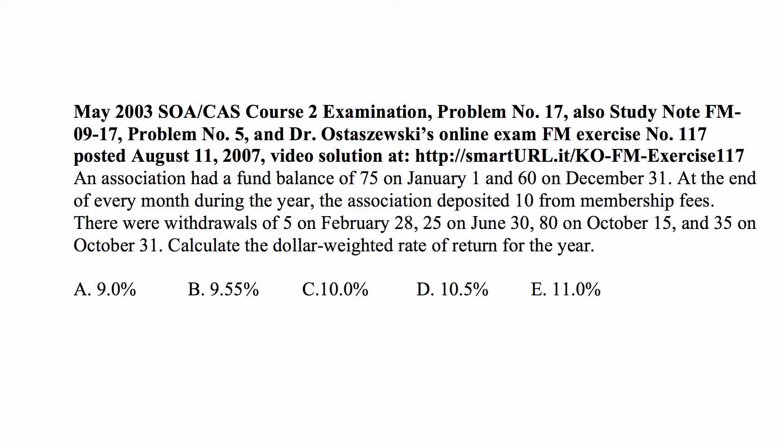Calculate the dollar-weighted rate of return for the year. The dollar-weighted rate of return is calculated under the assumption of simple interest, and it is always calculated as a ratio with the top being the net amount gained, and the bottom being the amount in the account multiplied by the fraction of the year that it has been in the account — or, if taken out, with a minus sign for the fraction of the year it has been withdrawn.